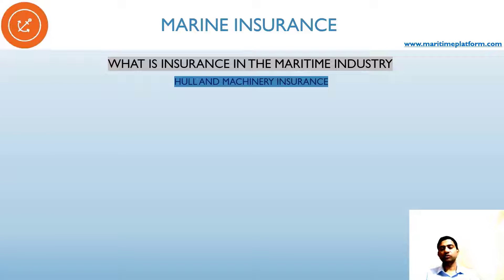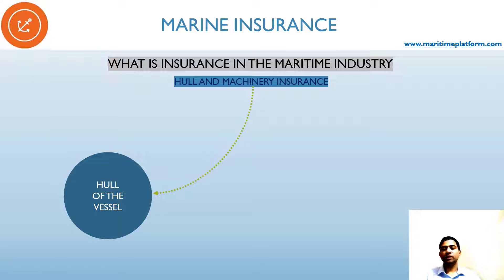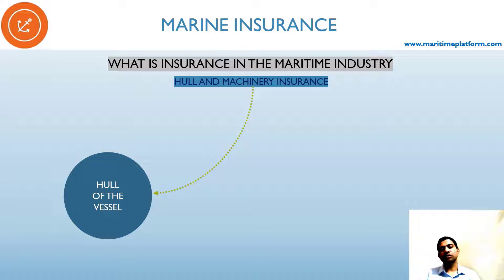Hull and machinery insurance. We had seen the types, so we will go into each type a little deeper. Hull of the vessel: all the steel areas of the vessel are insured under this. If there is damage to the hull — for example, you go onto a jetty and the hull touches the jetty and is broken — or the anchor chain is lost, all this comes under the hull of the vessel. Whatever steel is used on the ship, if there is any issue, hull and machinery insurance takes care of it.